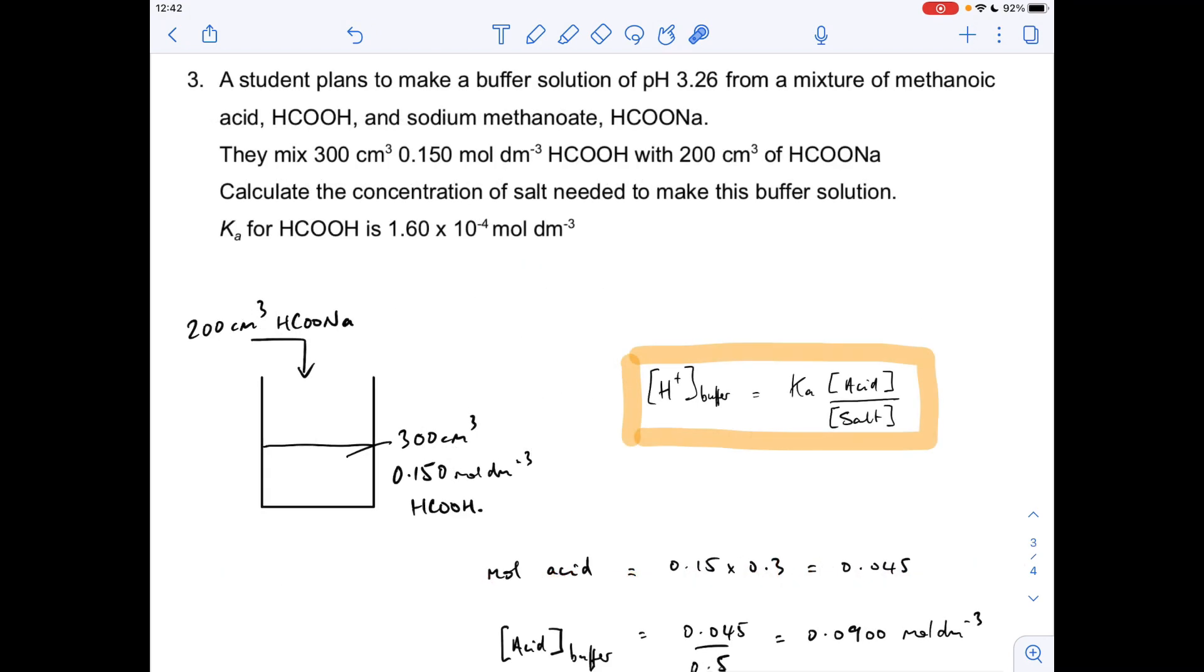Okay, so question 3 now. It's the trickiest one of the three, I would say, and it's down to the fact that you've got to differentiate between the moles and concentrations of the components in the buffer to the moles and concentrations of the components from the original solutions. So hopefully that'll all make sense as I go through, but basically we're going to use the acid over salt equation.